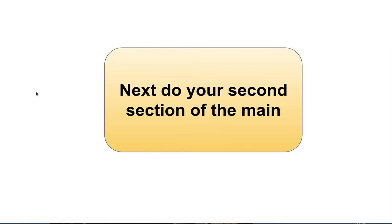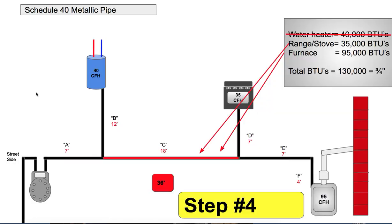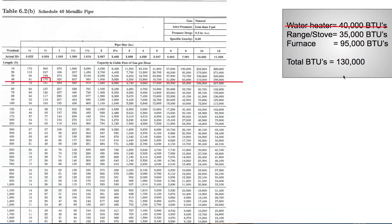Next, the second section of the main carries the load of the range and the furnace, which gives you 130,000 BTUs. In the 40-foot column, 130,000 is larger than 81,000, so that section is 3/4 inch.